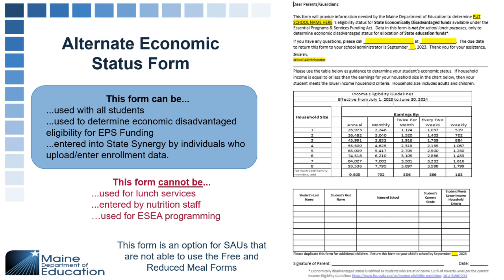This form is used to determine economic disadvantage eligibility for EPS funding purposes only — not for nutrition or ESEA. This data gets entered from the form directly into your student information system, which communicates up to State Synergy. It is only to be entered by individuals who are uploading data into State Synergy.